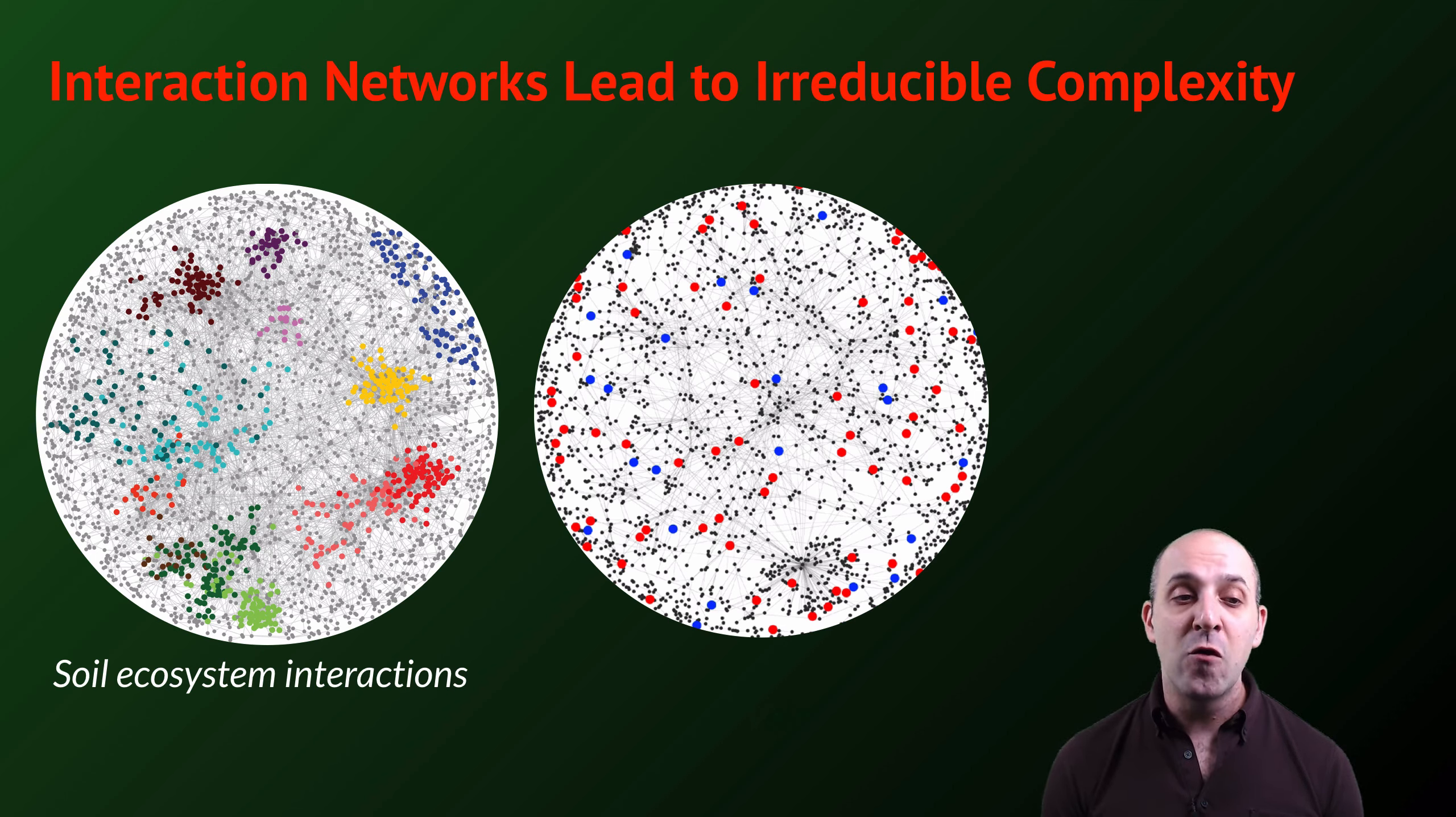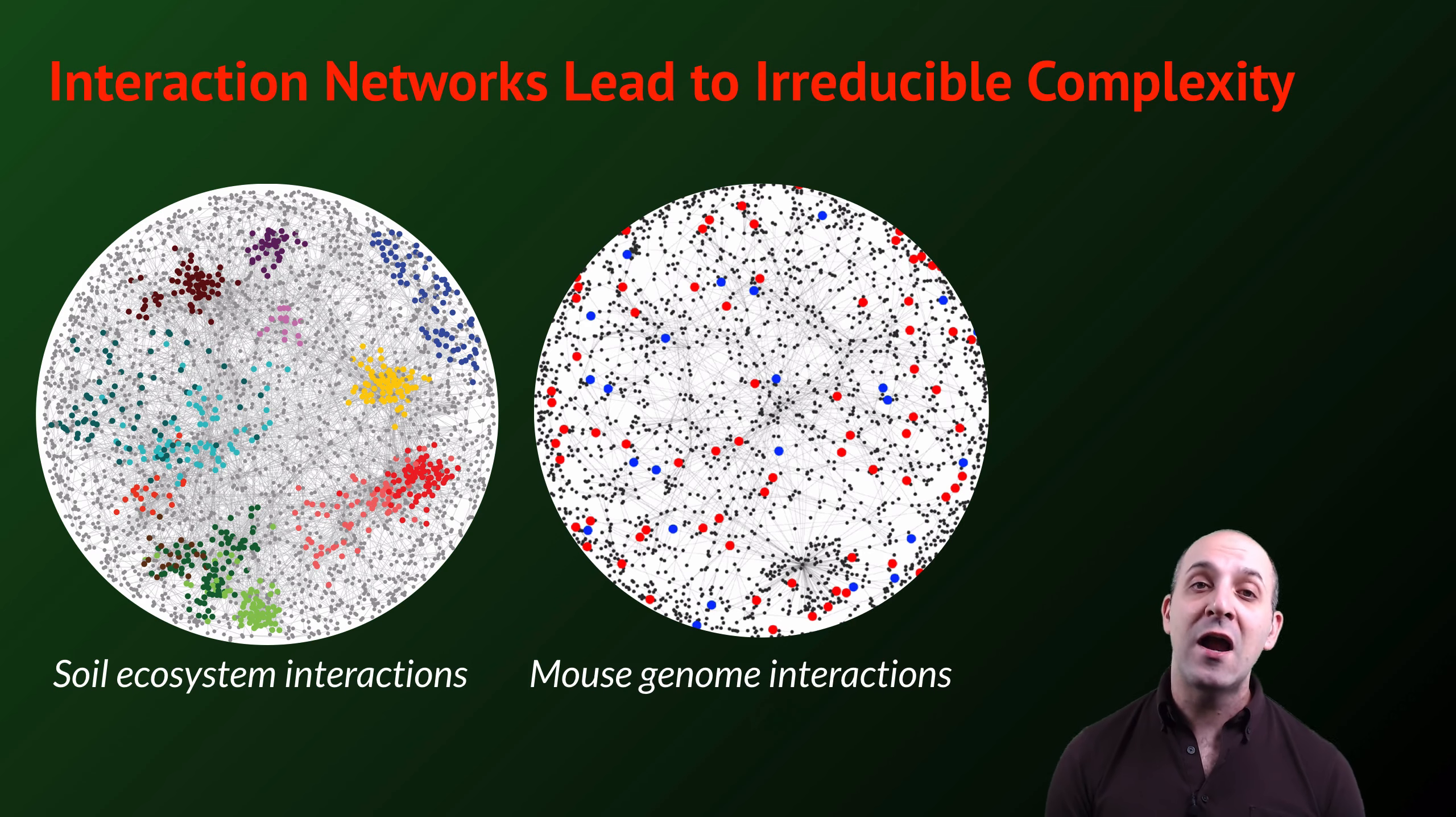What we have here are two different interaction diagrams of two very different biological systems. On the left, we have soil-ecosystem interactions among the bacteria that are found in a particular patch of soil. On the right, we have genome interactions in a mouse genome, interactions among the different genes and the proteins that they produce. It's not coincidental that these interaction diagrams bear superficial similarities. That's what we get when we start to study how components in an interacting system interact. We start to see the incredibly complex patterns that result from the sheer number of parts interacting in the system. And it's those interactions that lead to the functioning of the system as a whole.